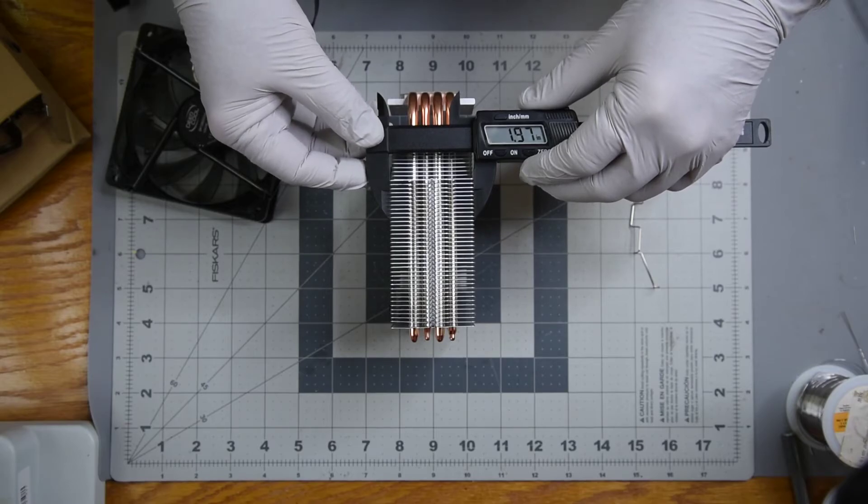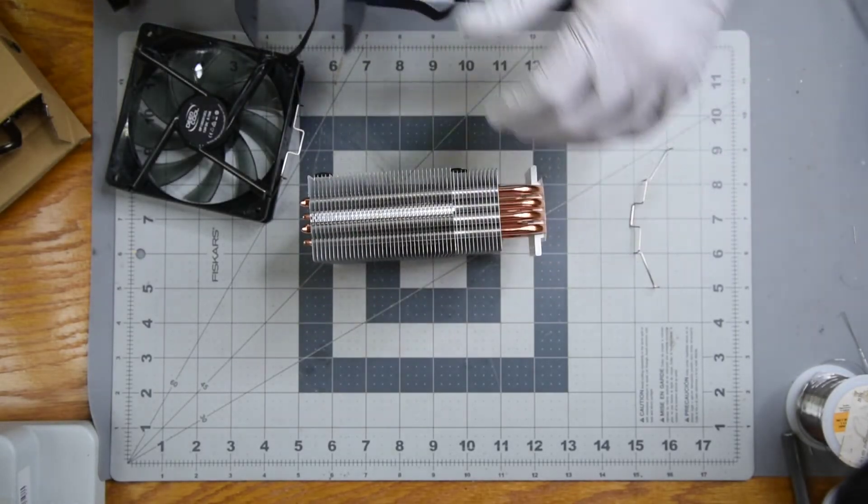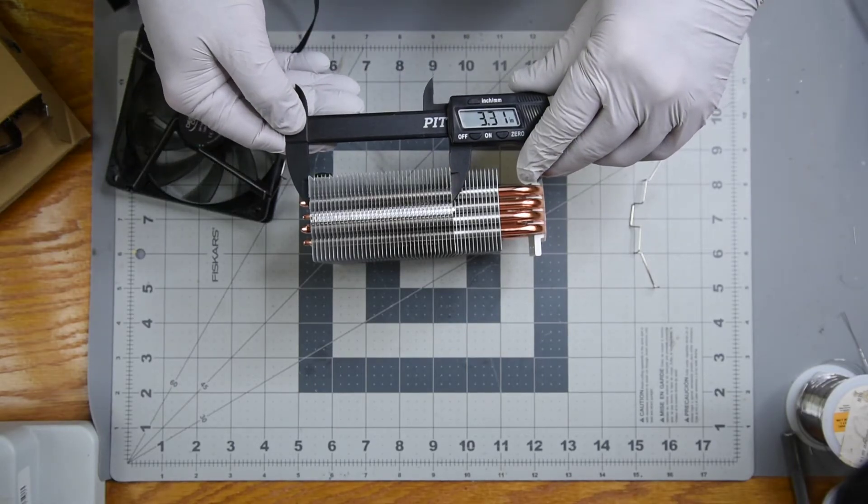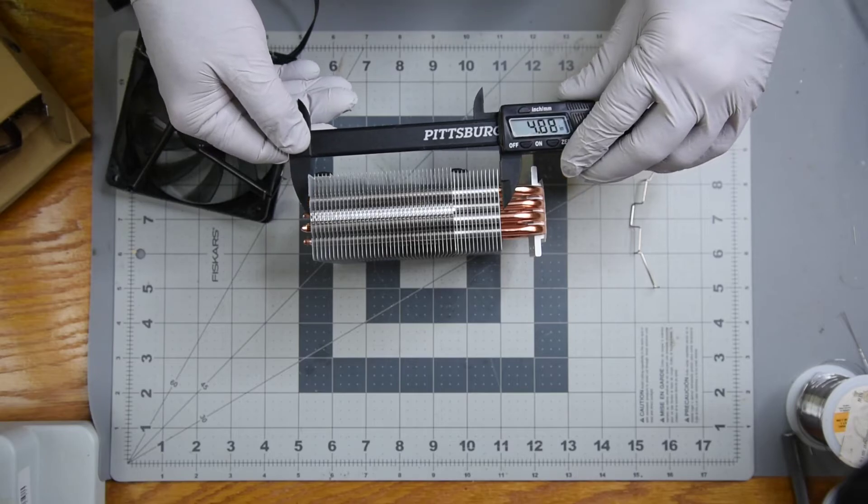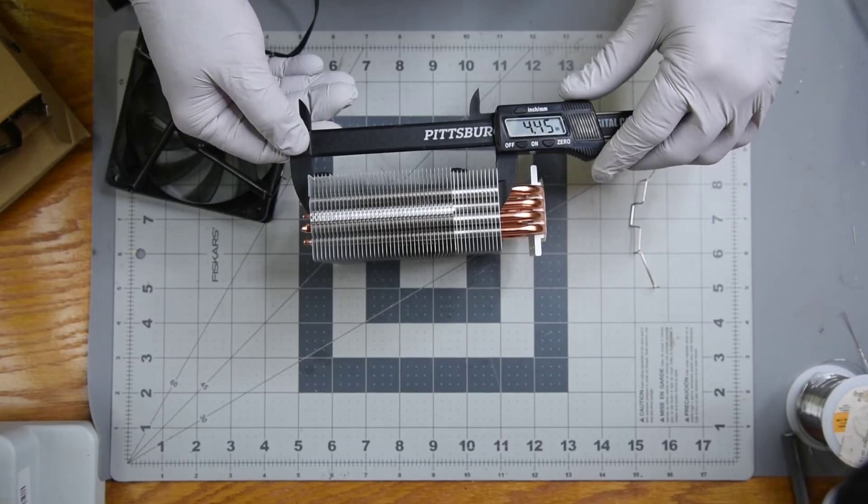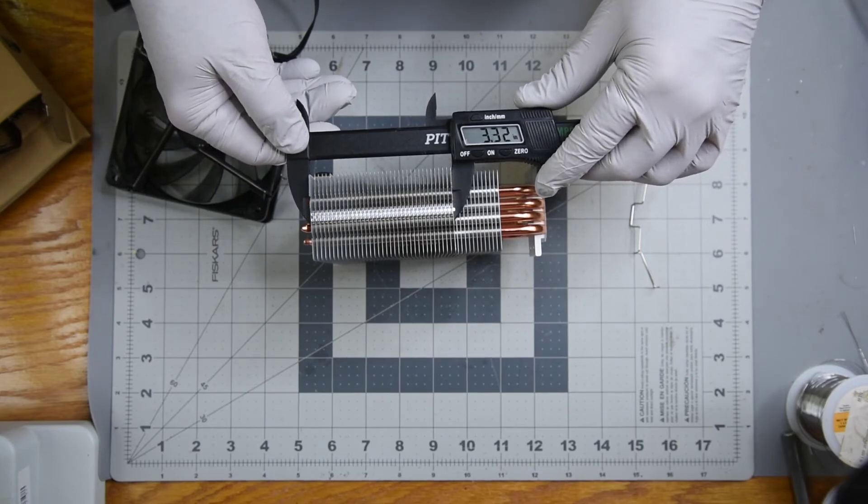Now I just have to find a good heat sink to use with it. One that doesn't have direct contact heat pipes would definitely be a plus. But the copper is big enough to cover the entire area of a CPU heat sink. So I may just order me another one of these. I'll have to do some research and some planning this time.